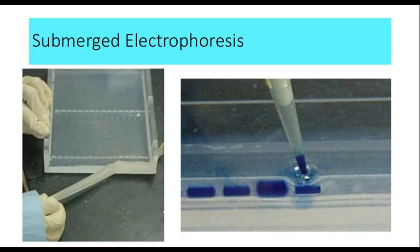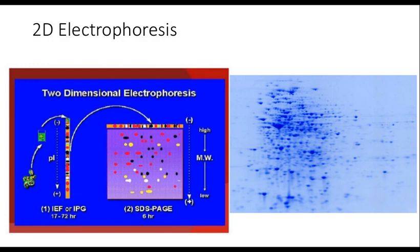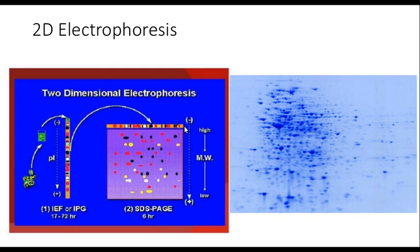Another type of electrophoresis you need to know is two-dimensional electrophoresis. This is generally at research level, used for detecting new types of cancers or new biomarkers. It is currently used in research rather than routine clinical practice. In two-dimensional electrophoresis, separation occurs along one axis and then along another perpendicular axis.